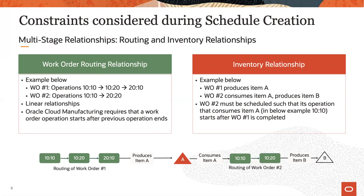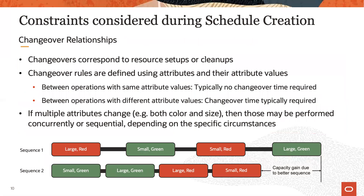Then, if a component is manufactured by work order 1 and this component is consumed by work order 2, then this is an inventory relationship and requires work order 2 to be scheduled after work order 1 produces that item. Changeover relationships are another set of constraints. When changing a resource from manufacturing one item to producing another, the time needed to perform the necessary setup or clean-up tasks on that machine must be accounted for.